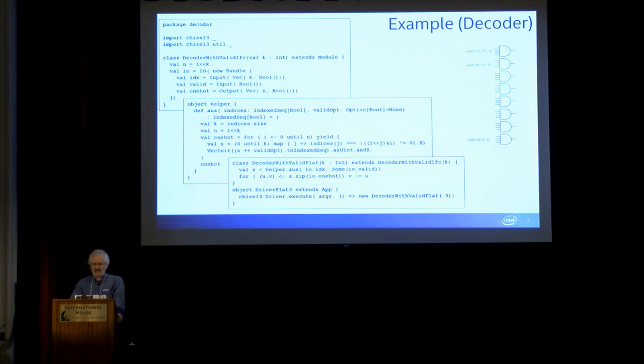So let's look at an example. Here's a complete example of building a decoder in Chisel. The top box there is just the interface—there's the index, a valid signal coming in, and then we have a one-hot collection coming out. There should be 2^k one-hot bits for k input bits.